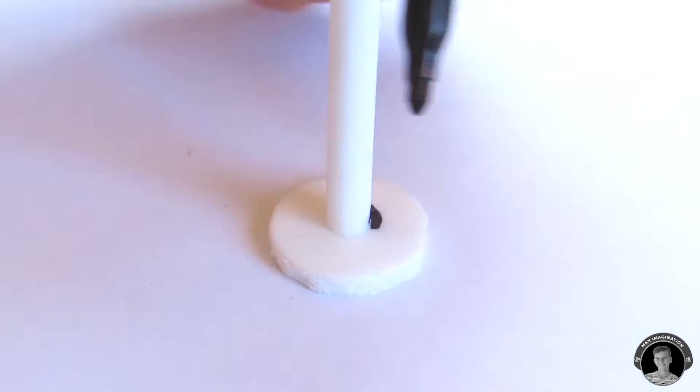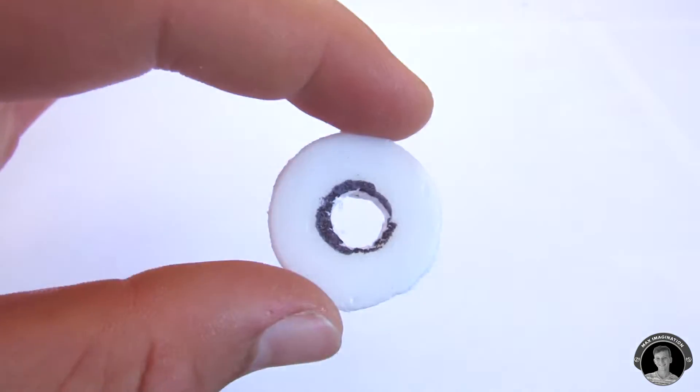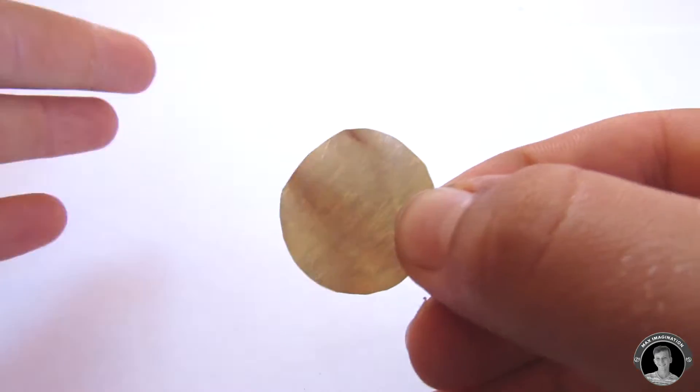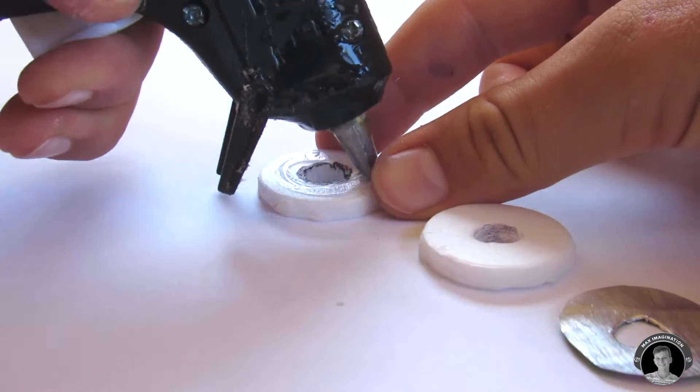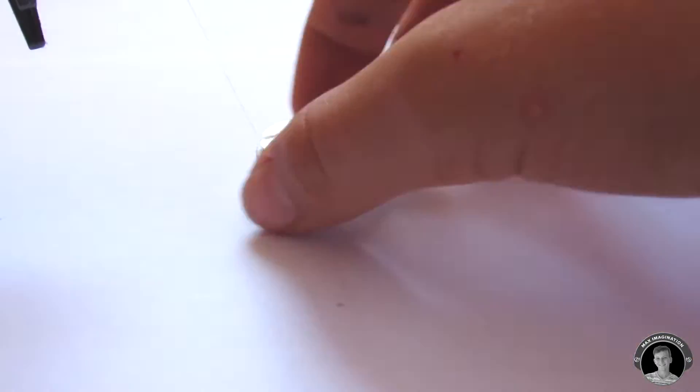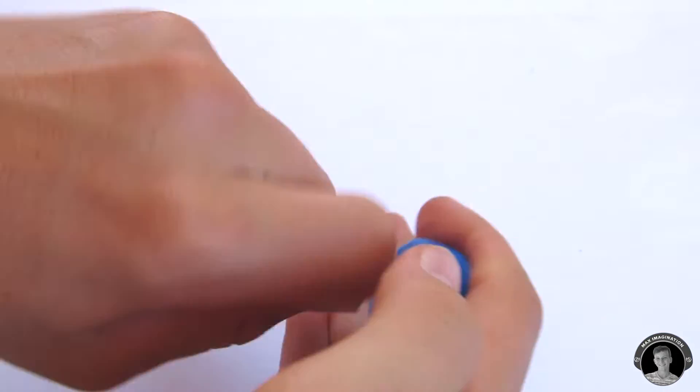Then take two of the foam circles and poke a hole in each of them. Then you're going to cut another circle out, but this time it's from a piece of a can. Now glue all three pieces together and this will be our floater.